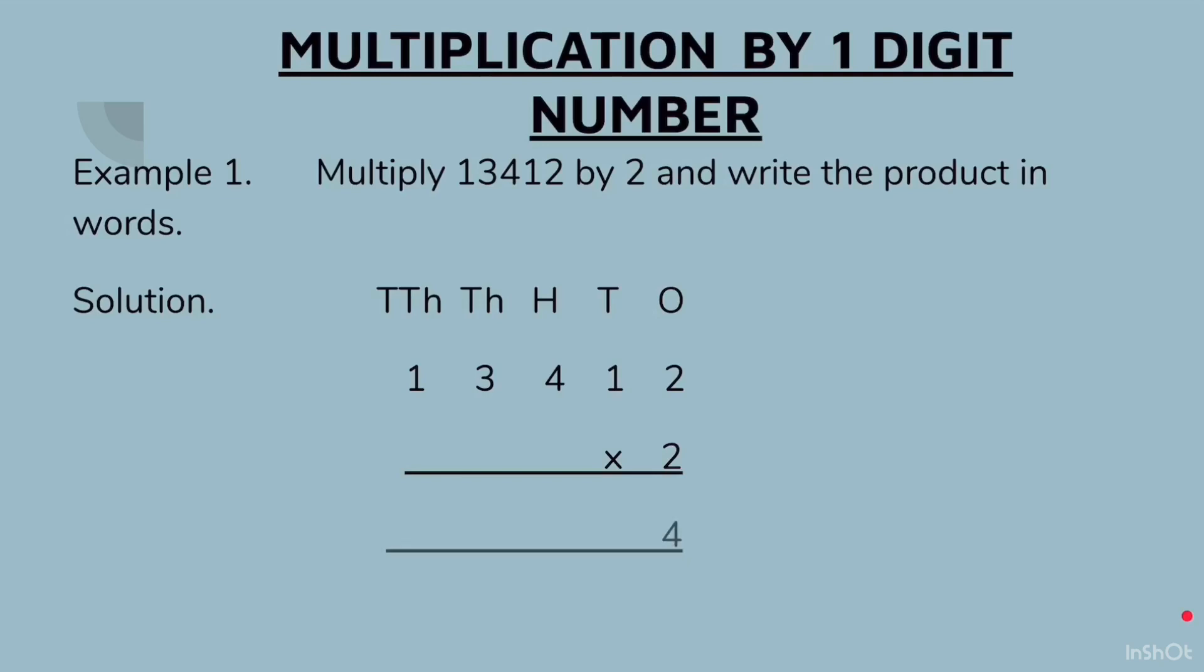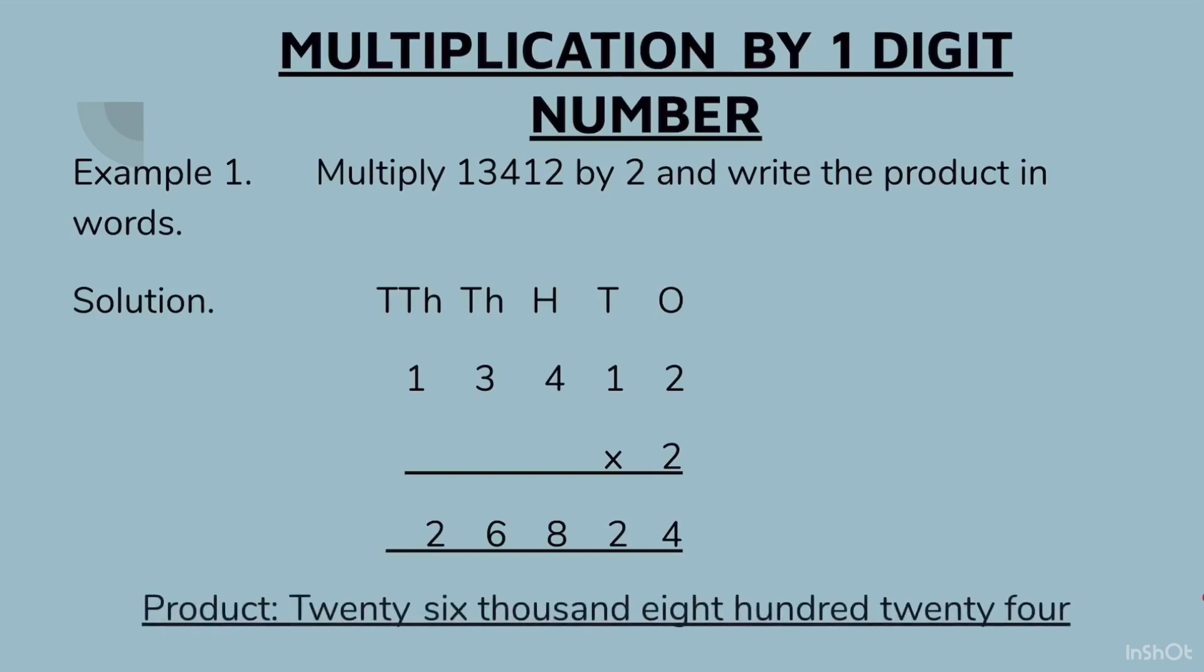In this question we will start with the ones column: 2 × 2 gives us 4. Then we multiply this 2 with the number in tens column: 2 × 1 gives us 2. Then we multiply this 2 with the number in the thousands column: 3 twos are 6. Now we multiply this number 2 with the number in ten thousands column: 2 ones are 2. So the answer we have got is 26,824. This is how you will write the product in words.